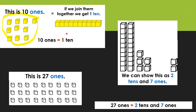Now, screw on that thinking cap nice and tight. Here we have 27 ones. What if I count them and place them in groups of ten? I will have one, two, three, four, five, six, seven, eight, nine, ten — one group of ten.